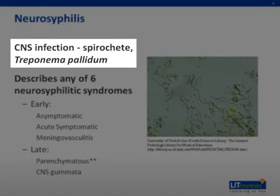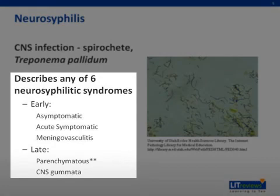Neurosyphilis refers to an infection of the central nervous system by the spirochete Treponema pallidum. The term neurosyphilis is used to describe any of six neurosyphilitic syndromes. Early ones include asymptomatic neurosyphilis, acute symptomatic neurosyphilis, and meningovasculitis, while late manifestations include parenchymatous neurosyphilis — under which dementia paralytica and tabes dorsalis fall — CNS gumata, and congenital neurosyphilis.